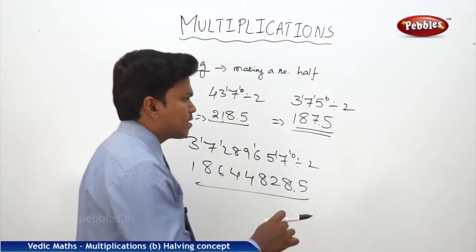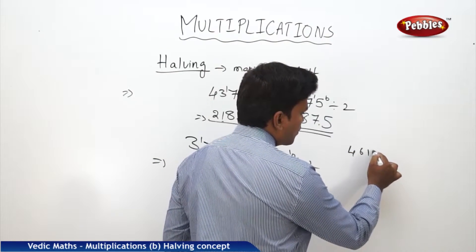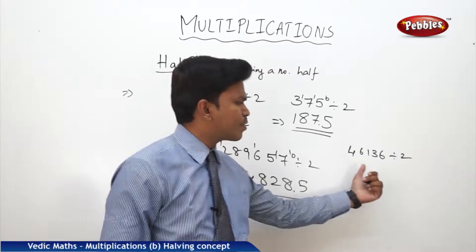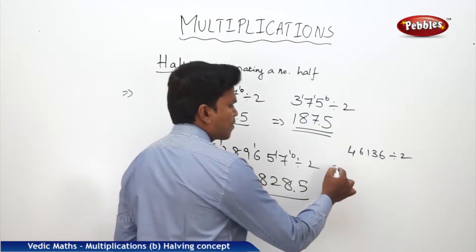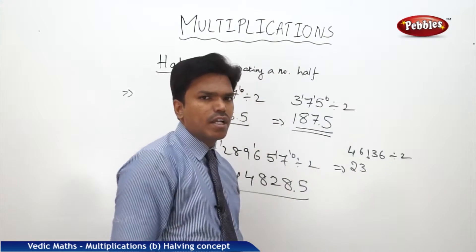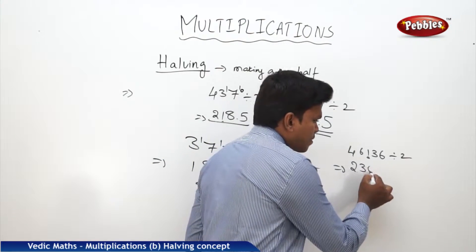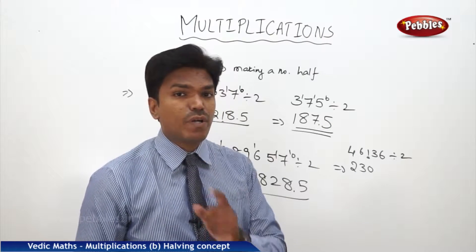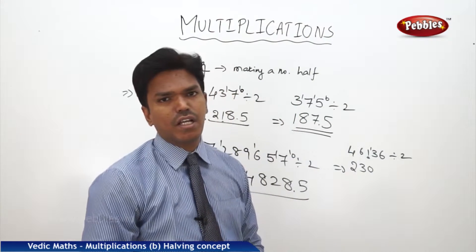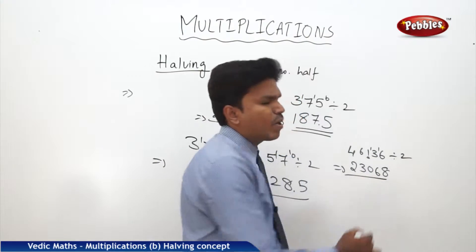Now one more example. Suppose I want to divide 46136 by 2. I want to make this number half. You tell me the answer: 2 twos are 4, 2 threes are 6. For 1: it will not go into 2 table — it goes 0 times; 1 minus 0 = remainder 1. Put that 1 before the next number — now it became 13. 2 sixes are 12, remainder 1. 2 eights are 16. So this will be your half: 23068.